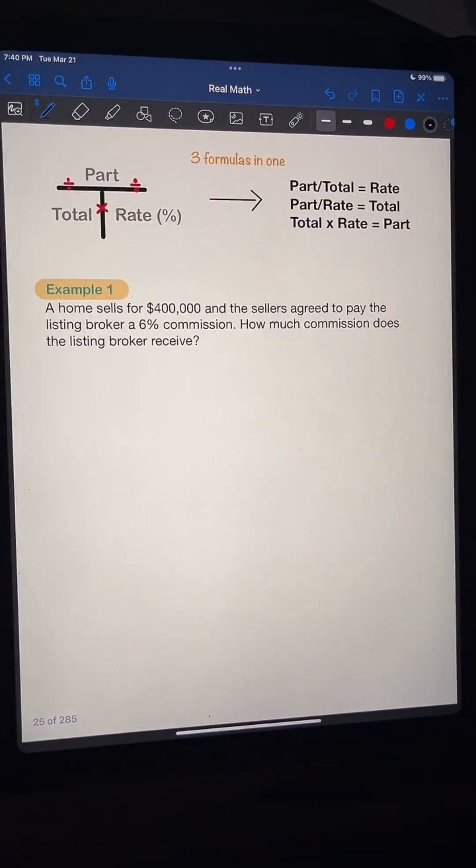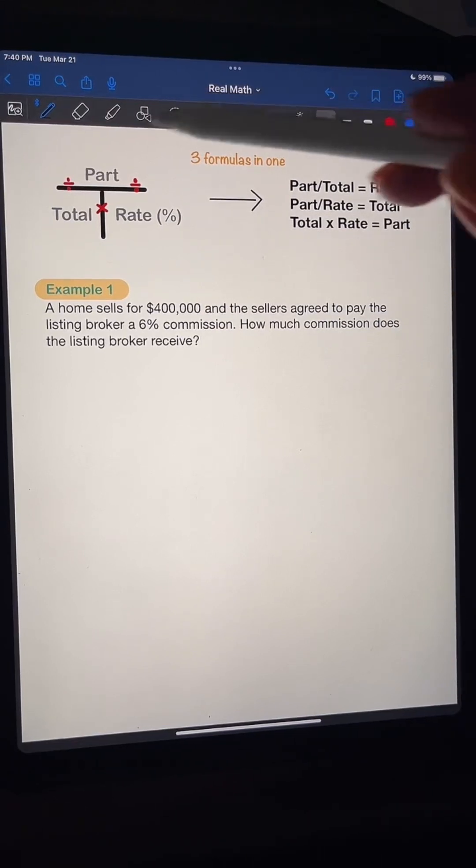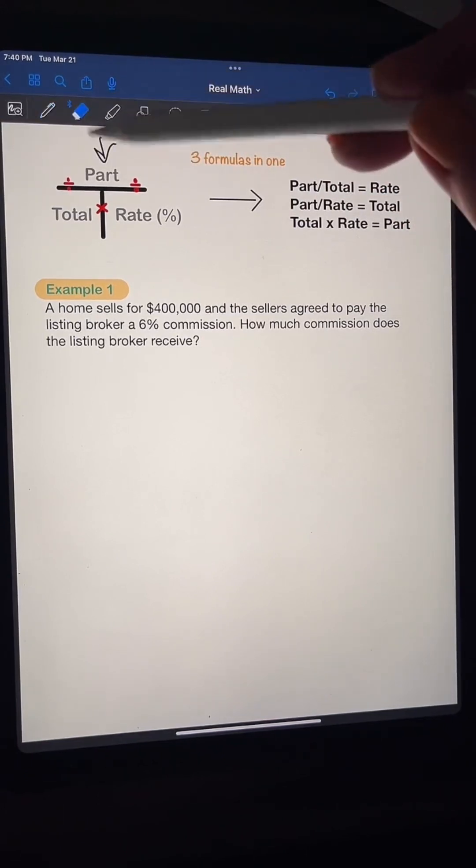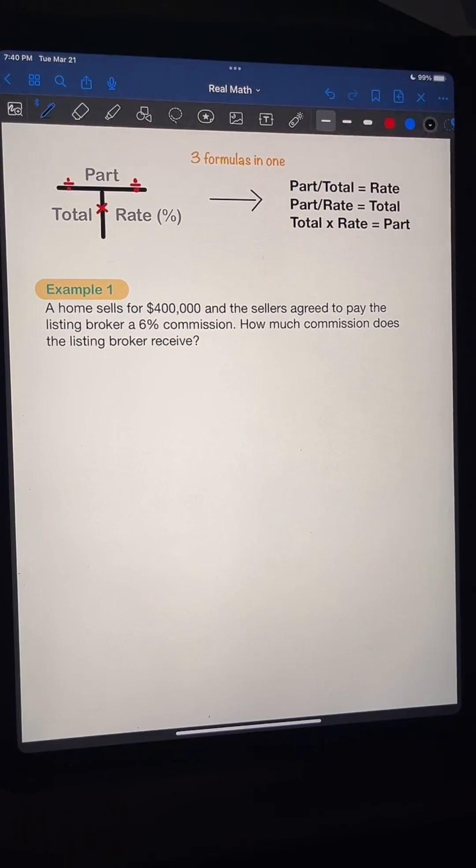All right. So this is example one. Okay? This is just the first example that we're going to be doing. All right? So we're going to use this T method that I taught you right here. All right? We're going to use that. We're going to put that into play right now.